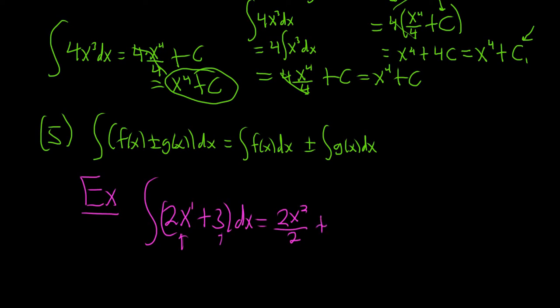And then 3, using the other formula, gives us 3x. And then we have our plus c. So this will be equal to x squared. Whoops, that's a c, not a 6. x squared plus 3x plus c. And that would be the answer.